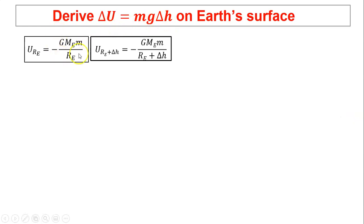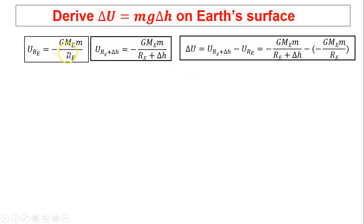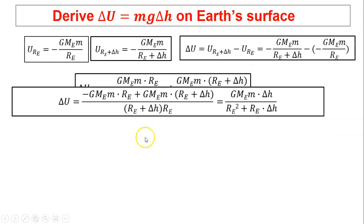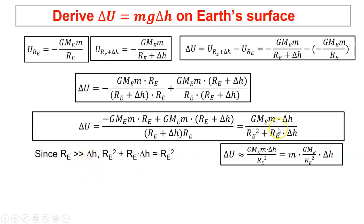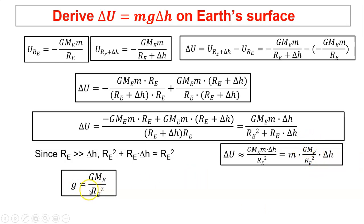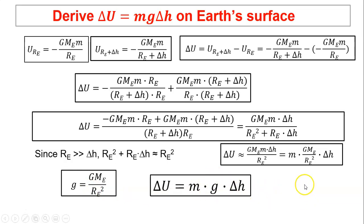We can use the general equation to derive delta U equals mg*delta h. Here is Earth's surface, and h is above Earth's surface. Delta U is the difference between the two — this involves subtracting fractions, so you need a common denominator. We know Re is much, much greater than delta h, so the denominator is approximately Re squared. Therefore delta U is approximately m times (GMe/Re²) times h. This term has a special meaning — it is gravitational acceleration g. So delta U equals mg times delta h. The most general expression: gravitational potential energy anywhere equals negative GMe*m over r.